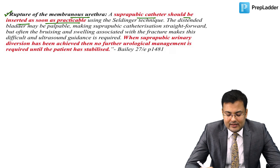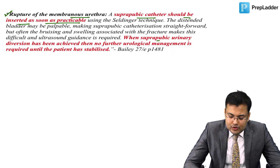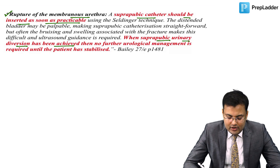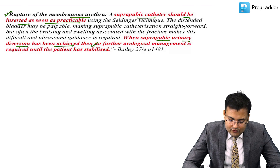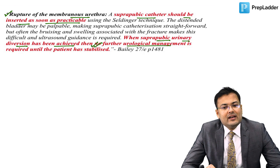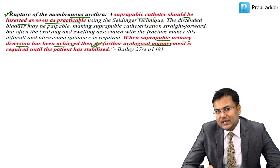From Bailey's: a suprapubic catheter should be inserted as soon as practicable. Since the bladder is distended and palpable, SPC insertion is straightforward. When suprapubic urinary diversion has been achieved by SPC, no further urological management is required immediately.